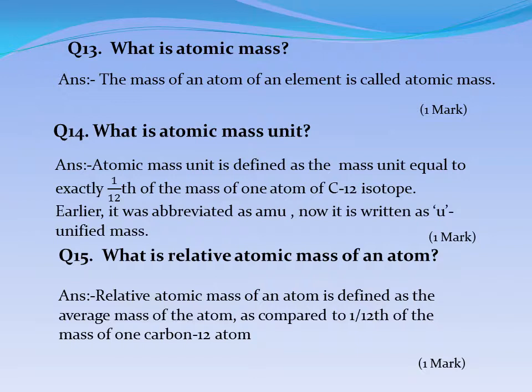Question No. 14: What is atomic mass unit? Answer: Atomic mass unit is defined as the mass unit equal to exactly one-twelfth of the mass of one atom of carbon-12 isotope. Earlier it was abbreviated as AMU. Now it is written as U (unified mass).